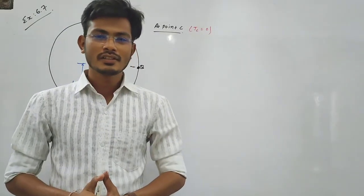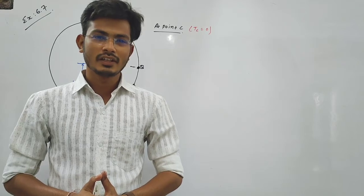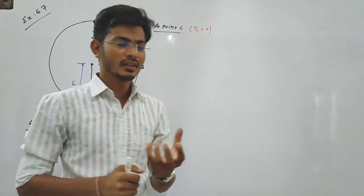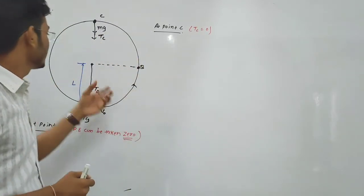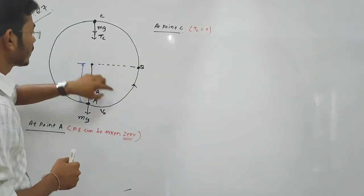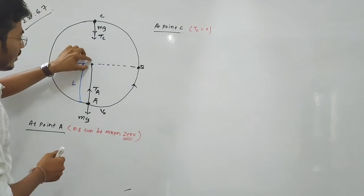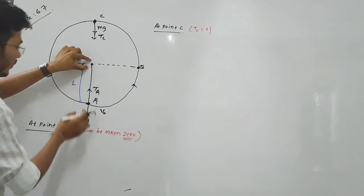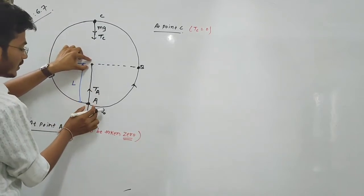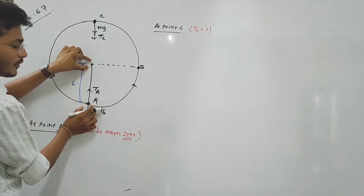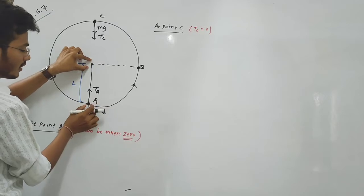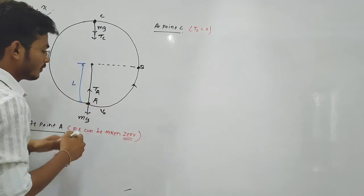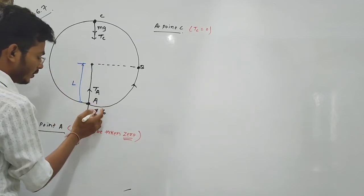In this example, what are the given data? The bob undergoes circular trajectory. Here we have certain considerations. As shown in the figure, A is the lowest point. The string has tension acting upward, and gravity mg acts downward.